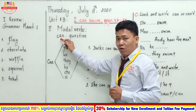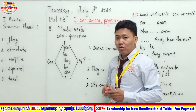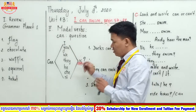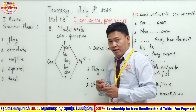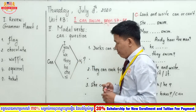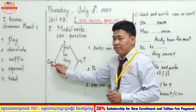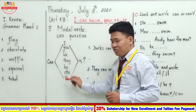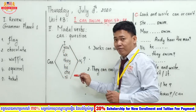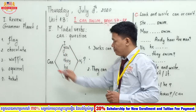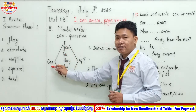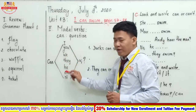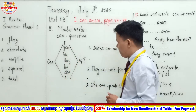'Can' is called a modal word. We will use it in questions. This is the form — read the form with me: can + subject pronouns (I, you, we, they, he, she, it) + verb one. Again: can + subject pronoun (I, you, we, they, he, she, it) + verb one.